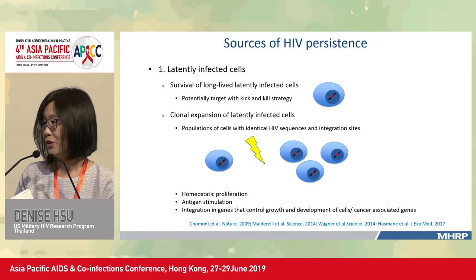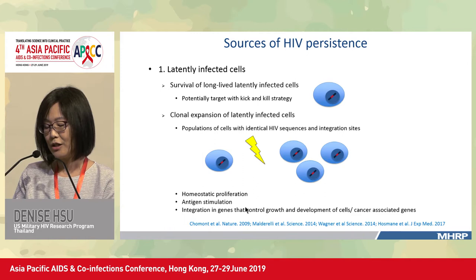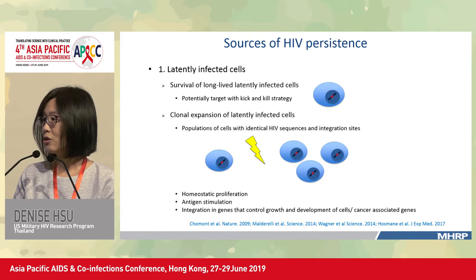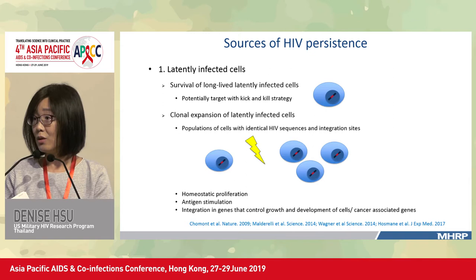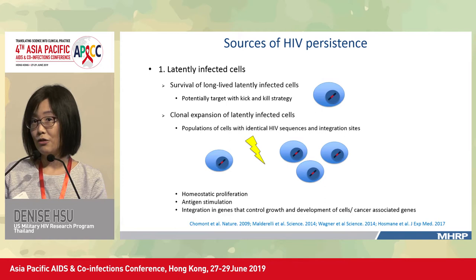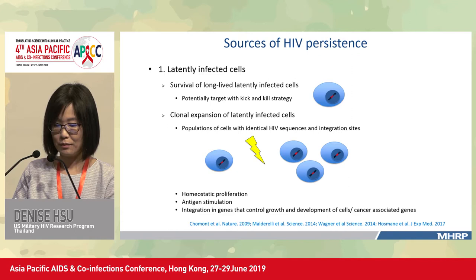However, it's not as simple as that. There is also clonal expansion of latently infected cells. Due to homeostatic proliferation, antigen stimulation, or integration in genes that control cell growth and development or cancer-associated genes, these cells proliferate, generating more and more latently infected cells with identical HIV sequences and the same integration site — because they're from the same clone.